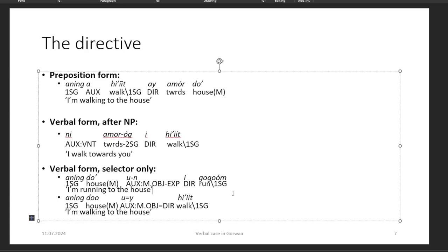We can also have the verbal complex internal forms with a noun that's not inside the verbal complex. In aninkur un ikugom, 'I'm running to the house,' the directive is between the selector and the verb, but the noun it introduces, do, is before the verbal complex. The last example shows the cliticized form, where it becomes approximate — anink do ui he it, instead of ui. The cliticized and full forms vary a lot.